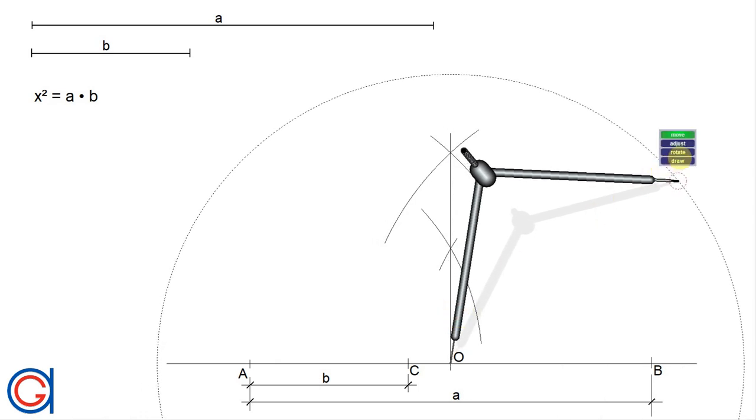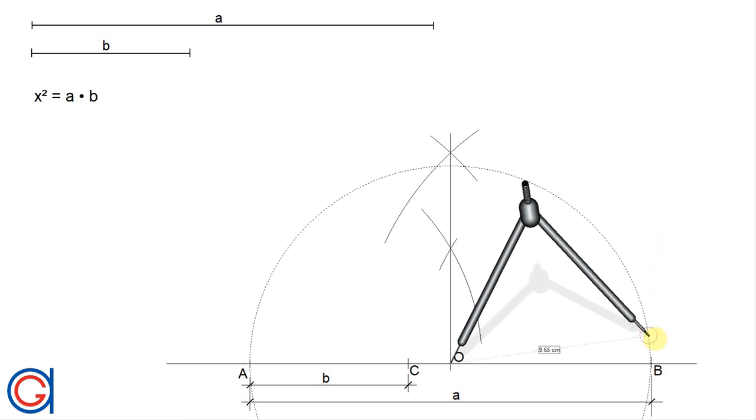So now setting the compass to the radius OB or OA, we're going to draw a semicircle joining points B and A.